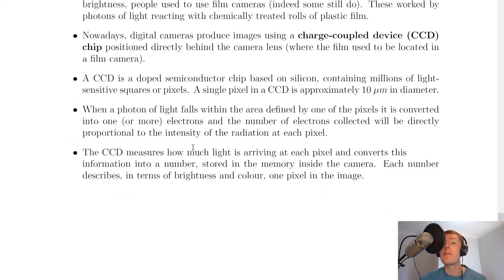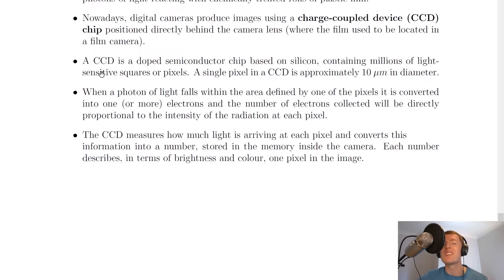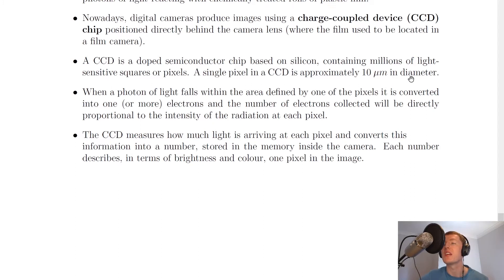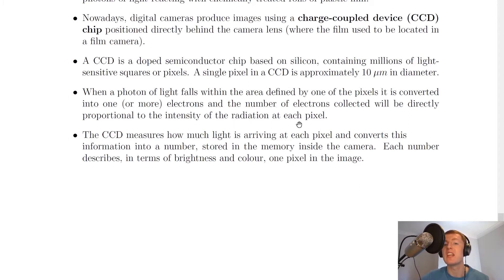A CCD is a doped semiconductor chip based on silicon containing millions of light-sensitive squares or pixels. A single pixel in a CCD is approximately 10 micrometers in diameter. When a photon of light falls within the area defined by one of the pixels, it is converted into one or more electrons, and the number of electrons collected will be directly proportional to the intensity of the radiation at each pixel.